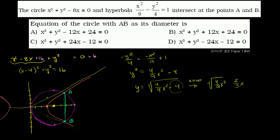The easiest way is to solve for y squared from the circle equation and substitute it into the hyperbola. From the circle: y squared equals 8x minus x squared. We substitute this for y squared in the hyperbola equation x squared over 9 minus y squared over 4 equals 1, replacing y squared with 8x minus x squared.